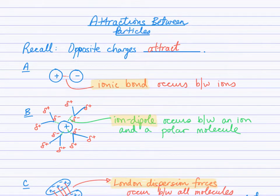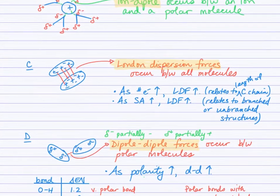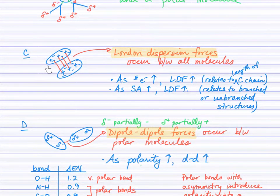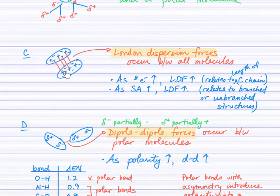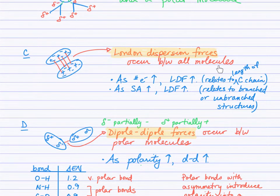In section C, any molecule is represented with positive charges as protons in the nuclei and negative symbols as electrons. A second similar molecule is shown, and the red line indicates an attraction between the electrons in the first molecule and the protons in the second molecule — and vice versa. These attractions are called London dispersion forces, and they occur between all molecules because all molecules are made of atoms, and all atoms are made of protons and electrons.